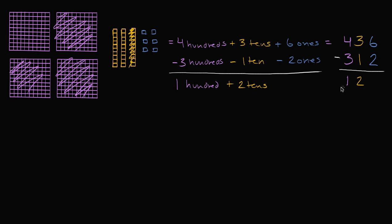Three minus one is two. We had six ones, we're taking away two ones, and we're gonna be left with four ones — six minus two is four. Four hundred and thirty-six minus three hundred twelve is a hundred and twenty-four. We took away three hundreds, one ten, and two ones to get one hundred, two tens, and four ones.